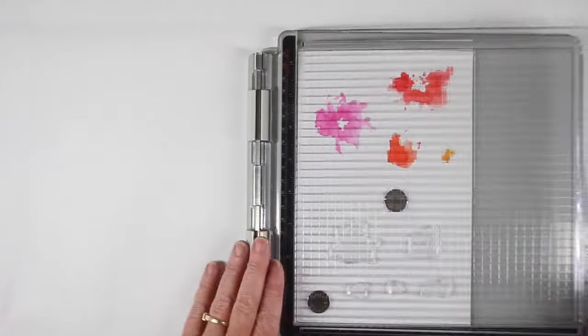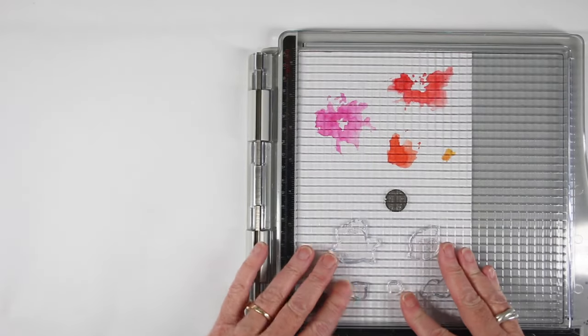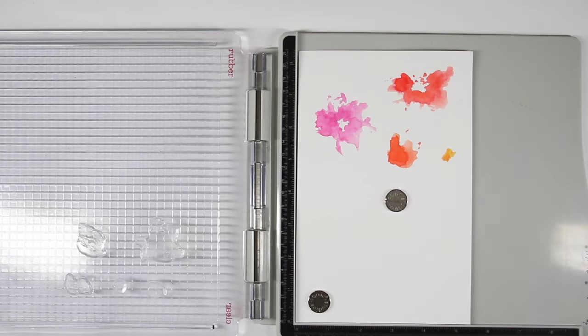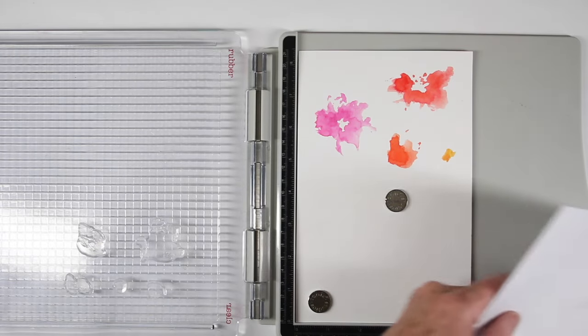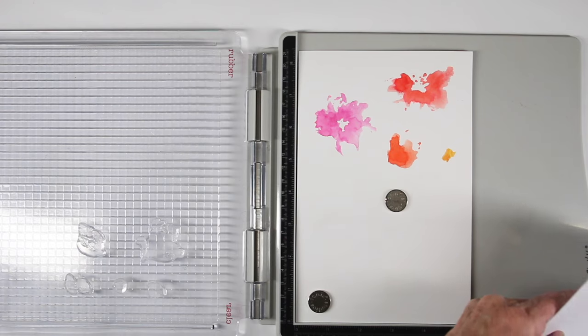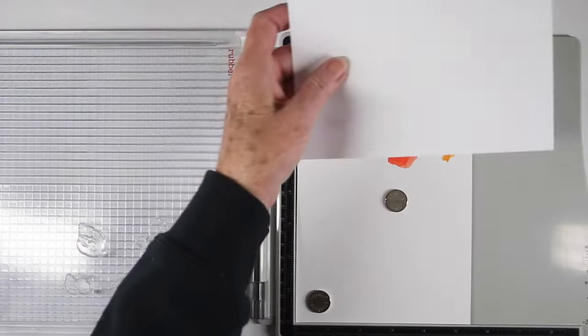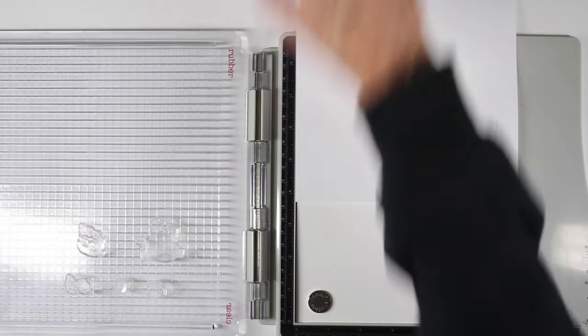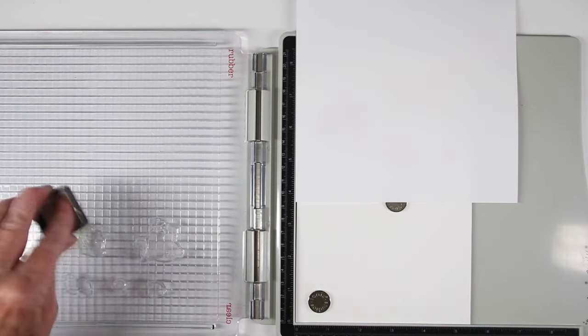Next it's time to stamp my leaves and I've removed the flowers and now I've added the leaves to the bottom portion of the platform. And for these I'll be using my peeled paint and my bundled sage. And I do want to cover up my flowers that I've already stamped. So I'm just going to go ahead and place a piece of paper on top. I really don't want to get any splashes of color on those.